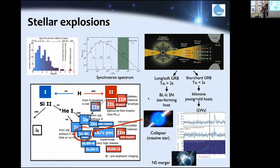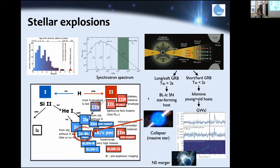All of these long bursts are connected to broad-line Type Ic supernovae — stars that have lost their hydrogen and helium envelope, with very high expansion velocities that broaden the spectral lines. The dividing line between long and short is artificial and was originally made in the observer frame, but these things have redshifts from zero to nine, so that's not necessarily the rest-frame duration.